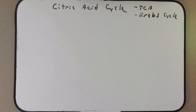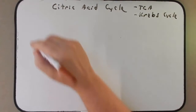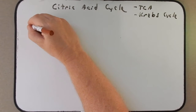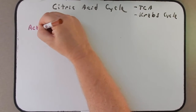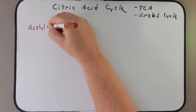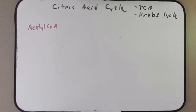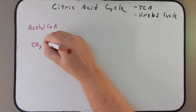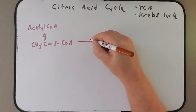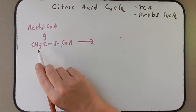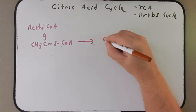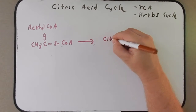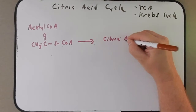Sometimes names change for various reasons, and we're going to focus and call it the citric acid cycle in this class. I want to begin with a brief discussion about acetyl coenzyme A and why this is important. Acetyl coenzyme A has the molecular structure shown here. It is important because it is this acetyl coenzyme A that enters into the citric acid cycle.